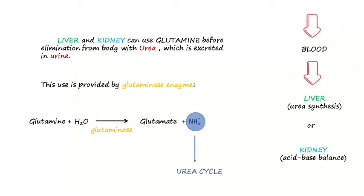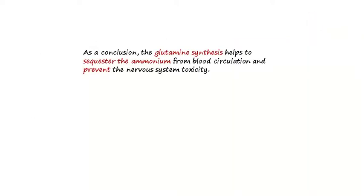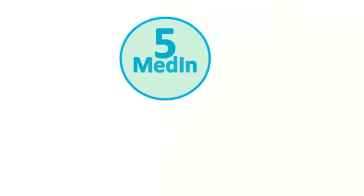As a conclusion, glutamine synthesis helps to sequester ammonium from blood circulation and prevent nervous system toxicity. That was a brief summary of the topic from the Med in 5 team.